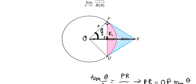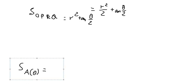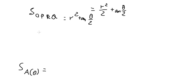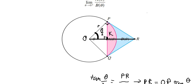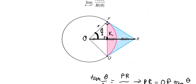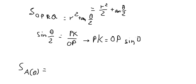We can find the length of BK. That should be about sine(theta/2). We have the opposite side, which is BK, divided by the hypotenuse, which is OB. So BK equals OB multiplied by sine(theta/2). OB equals O.